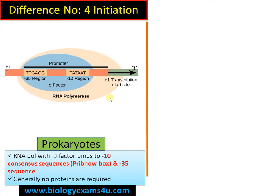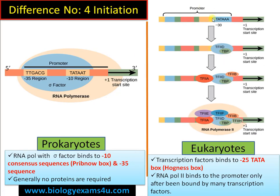In eukaryotes, similar to the Pribnow box, there is a minus-25 consensus sequence called the TATA box (or Hogness box). First, transcription factor IID binds to the TATA box, then many other transcription factors bind to the site, facilitating the binding of RNA polymerase. Therefore, in eukaryotes, RNA polymerase can only bind after several transcription factors have already bound to the promoter region.